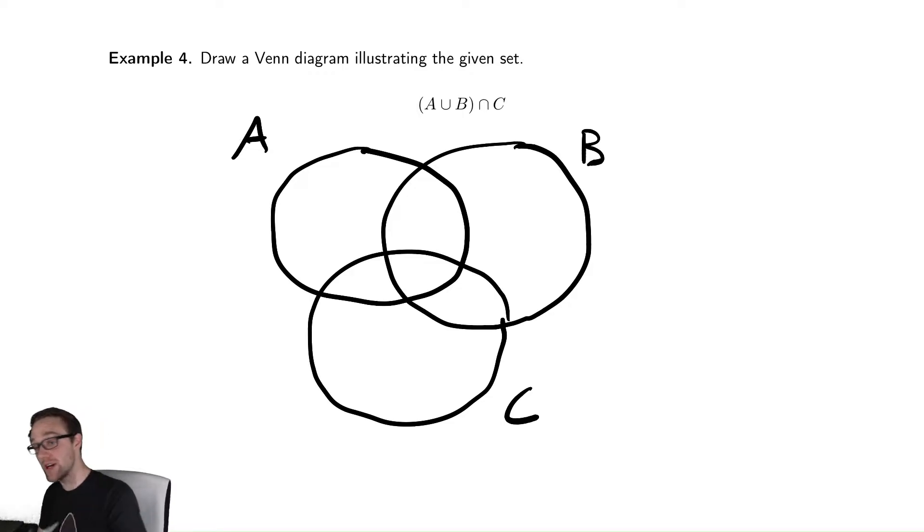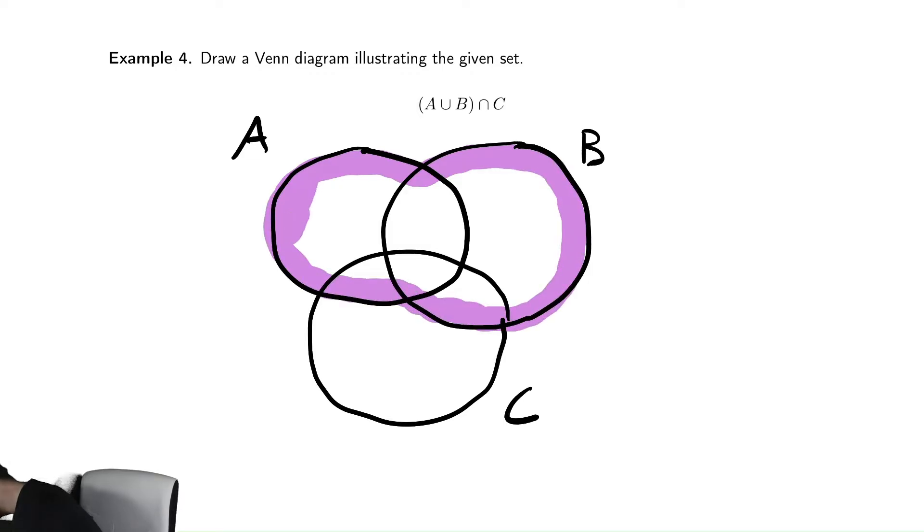We want to find out where does A union B, which I will highlight in purple, where does that set there intersect with C?